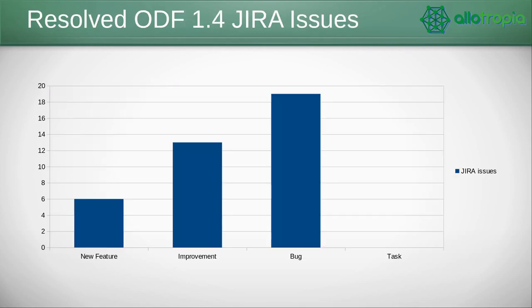What have we done already for the next version of ODF? We are tracking all proposals in the OASIS JIRA and have resolved already somewhere between 35 and 40 issues. There are several new features that have been accepted, more than a dozen improvement issues — some clarifications of the specification and in some cases small features — and the largest chunk of accepted issues have been defects in the specification that have been fixed.